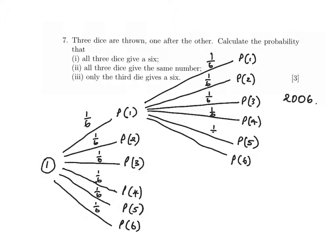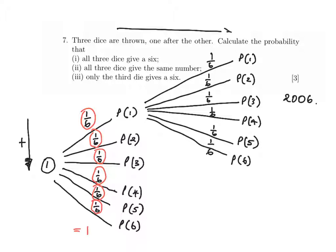You'll notice that if I add all these numbers — a sixth plus a sixth plus a sixth — these numbers, if I add them all together, give me the value one. So the probability of getting a one or a two or a three or a four or a five or a six is one. Now, how do we use these? Well, we add down the branches, as I've just shown. But when it comes to moving in this direction — from one set of branches to another — we always multiply.